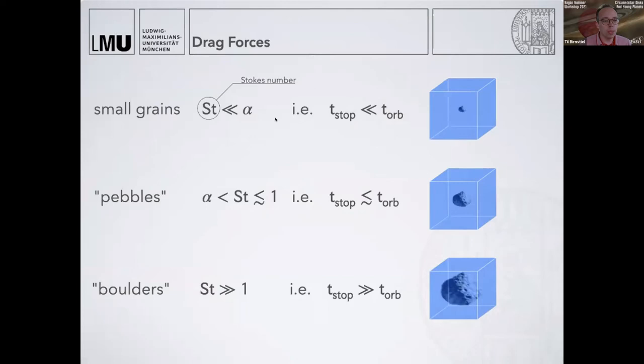These small grains are very well coupled to the gas, just like cigarette smoke. Their stopping time—the time on which they adapt to the gas speed—is much smaller than the orbital timescale. If you mention such a dust particle in a box of gas and you move it around, the particle will move along. But if we go to larger particles, we often call them pebbles.